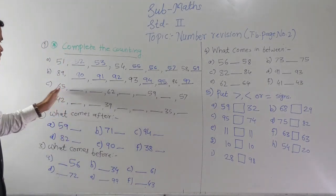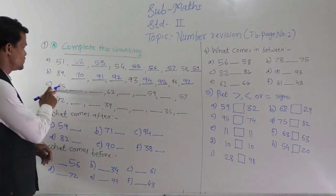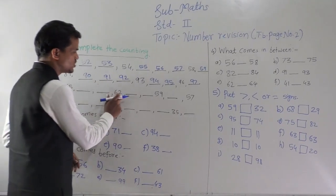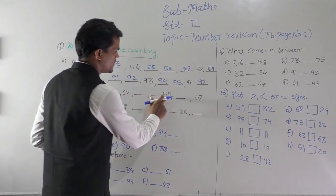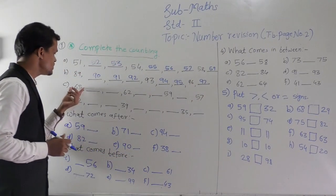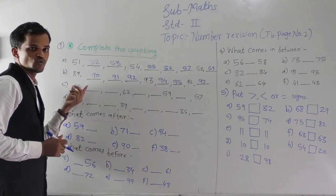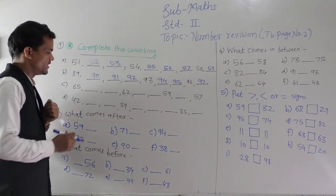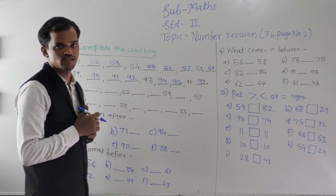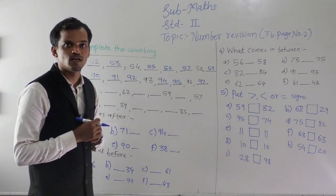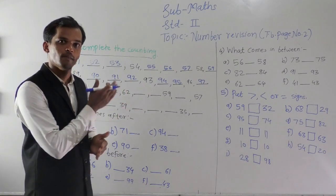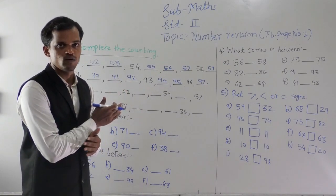Then next, you can see here 65, 62, 59 and 57. You can observe here the numbers are becoming less, so this counting is backward counting.